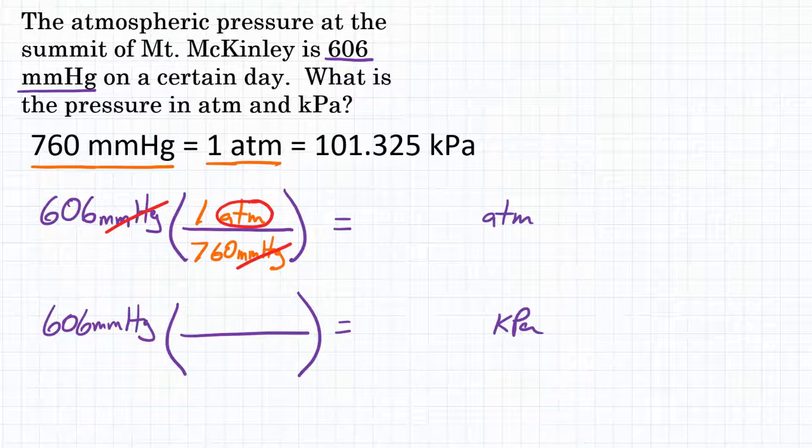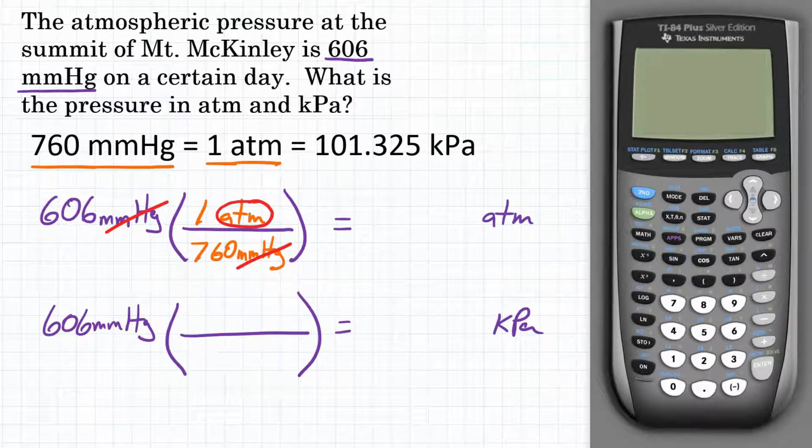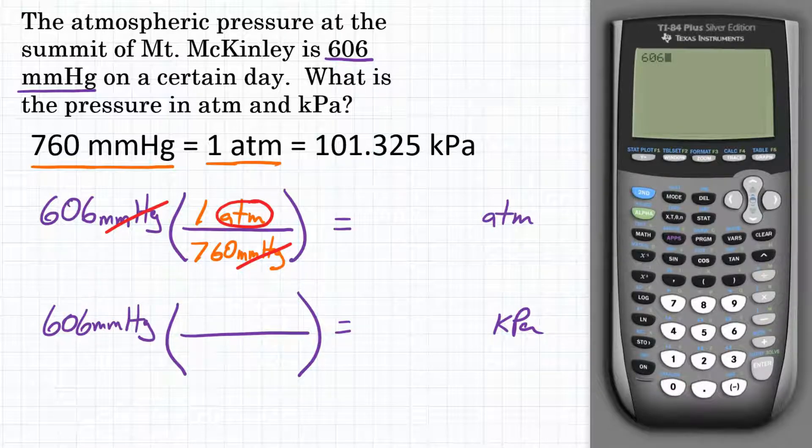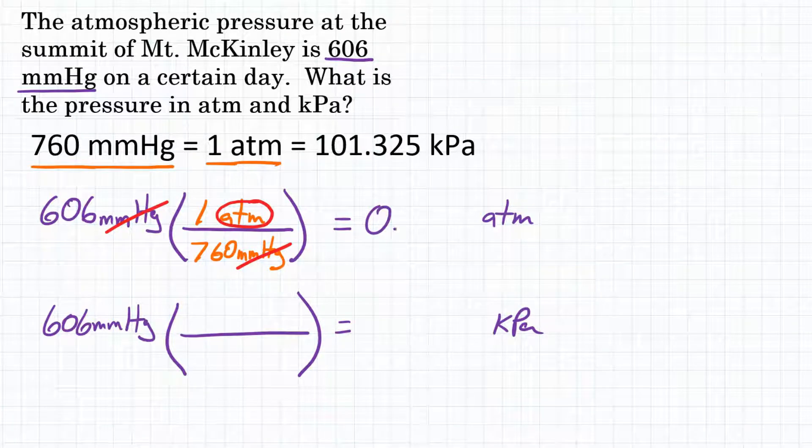So now we can do the math here. So if we get our calculator, we are going to start with 606, and we are going to multiply by this conversion factor, this fraction. So we will multiply by the top and divide by the bottom. And since the top is just one, we're going to skip that. So we are just going to divide by 760, hit equals, and our calculator gives us this. Let's round that to three significant figures. So we will get 0.797 atmospheres.